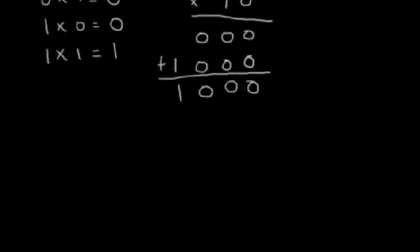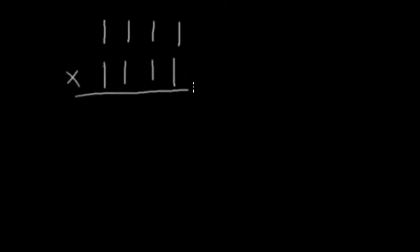There are some things we need to look out for. Imagine we have 15 times 15. So 15 in binary is 1111. We're going to multiply these together. 1 times 1 is 1, 1 times 1 is 1, 1 times 1 is 1, 1 times 1 is 1, and then 1 times 1 is 1. Put a little zero for place value.